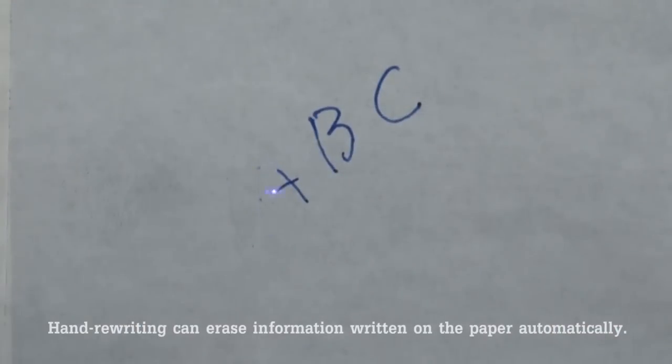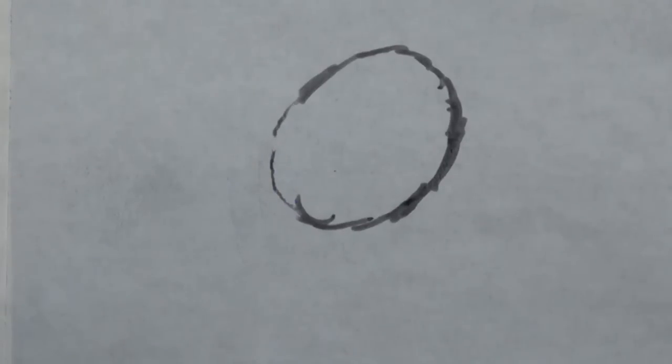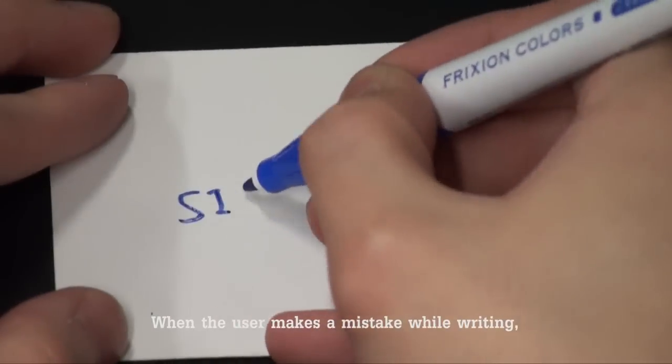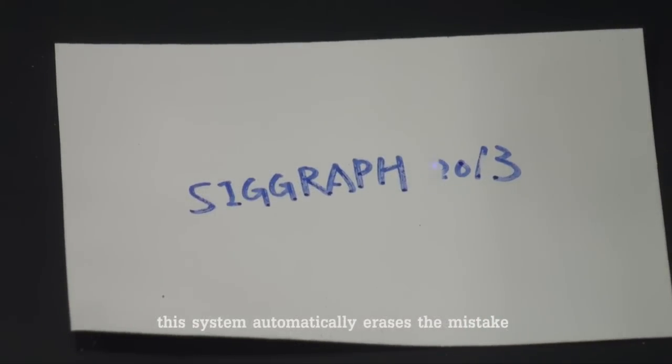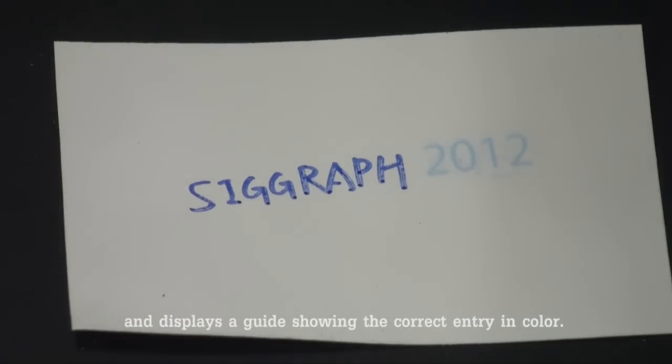Hand Rewriting can erase information written on paper automatically. This system can display additional information on paper in natural print light color. When the user makes a mistake while writing, this system automatically erases the mistake and displays a guide showing the correct entry in color.